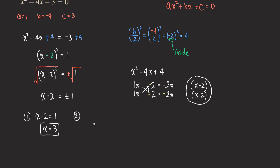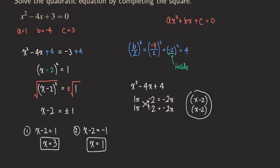For Case 2, x minus two equals negative one. Adding two to both sides, we get x equals one. You can check: one minus two gives negative one. So that is the second answer. That is basically the whole process for completing the square — x equals three and x equals one.